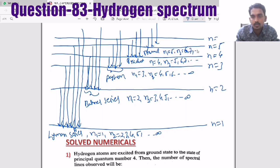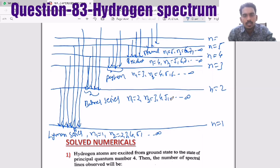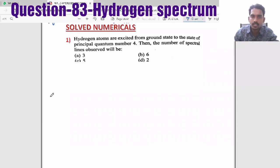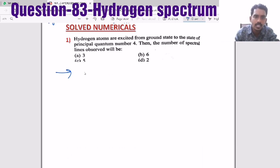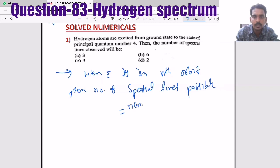For every series, infinity is the limit corresponding to minimum wavelength, and when N2 is minimum that corresponds to maximum wavelength. So they can ask the wavelength or energy for any particular transition. Let's see how questions will be asked based on this one particular equation — like: hydrogen atoms are excited from ground state to the state of principal quantum number 4, then the number of spectral lines possible will be?